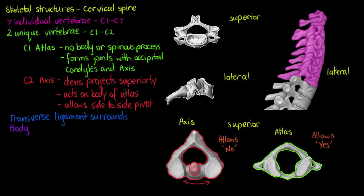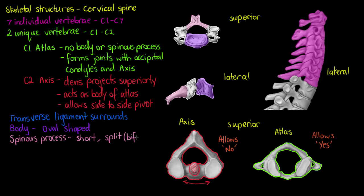Now we can move on to the individual structures of our other C3 to C7 vertebrae. The body of the cervical vertebrae is oval shaped, and like with our thoracic spine, the body is the largest portion of our cervical vertebrae. The next segment extending posteriorly is the spinous process. The spinous process on our cervical spine is short and has a split or bifid end — bifid meaning split. Another feature to note is that in the cervical spine the spinous process extends mainly straight backwards, whereas in the thoracic spine it extended more at a downward angle.